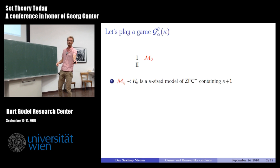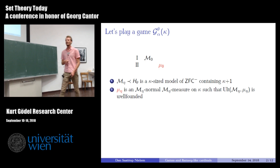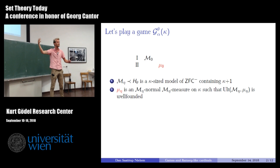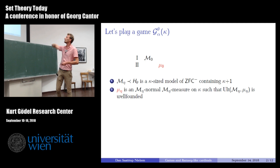θ is our second parameter — a regular cardinal strictly bigger than κ. That's player one's move. Then player two responds by playing a measure: more precisely, some μ₀ such that μ₀ is an M₀-normal M₀-measure on κ with a well-founded ultrapower.